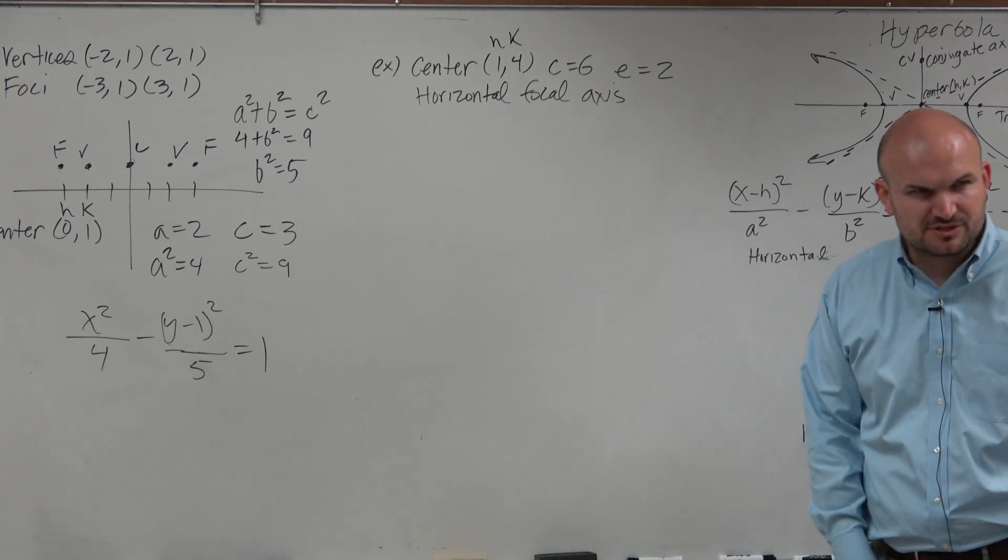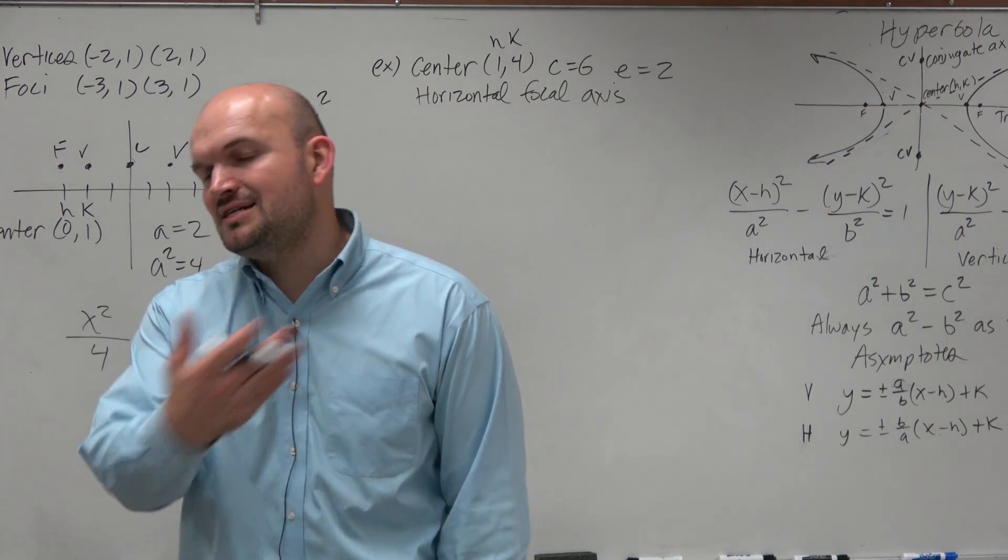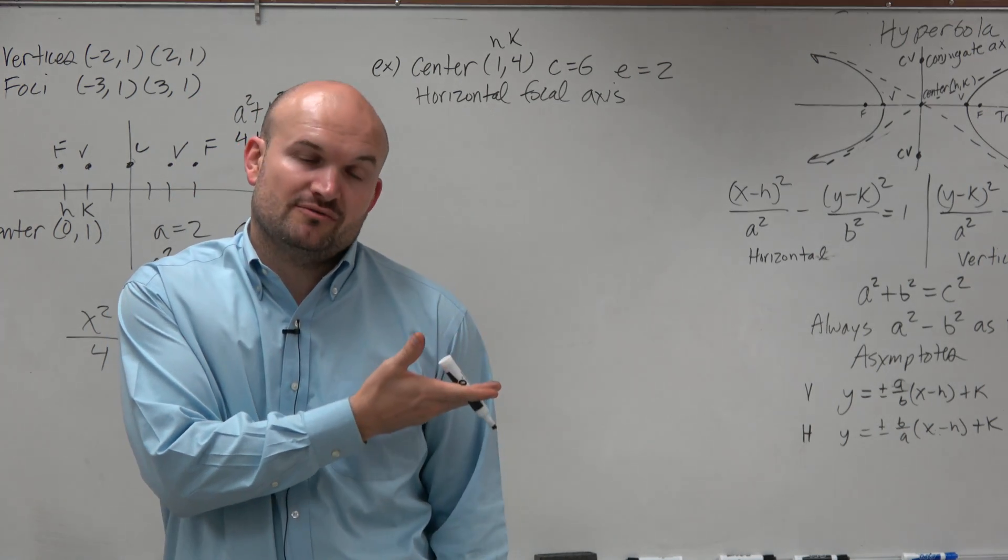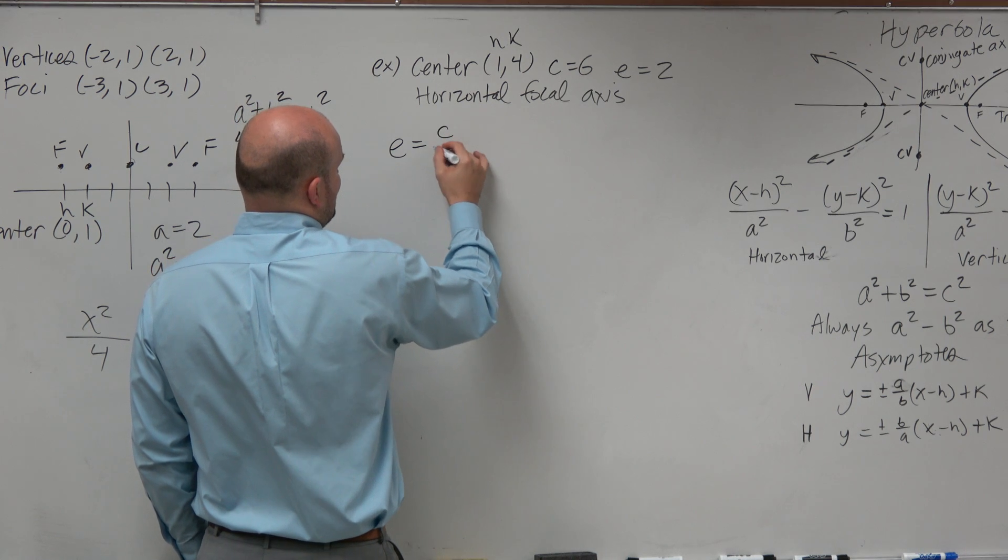Now this one can be a little confusing. They give me a value c, but then they give me eccentricity. Now eccentricity isn't on your notes for the hyperbola. I didn't write it down. But if you guys remember from the ellipse, eccentricity is c over a.